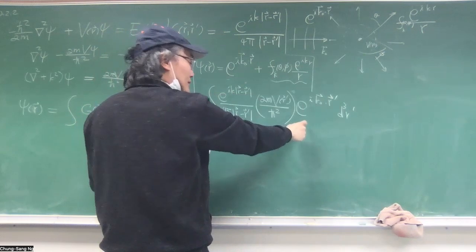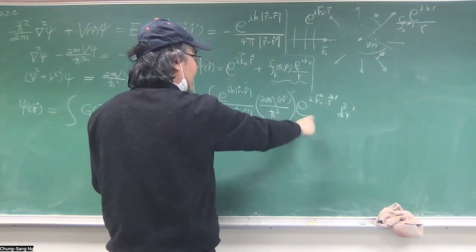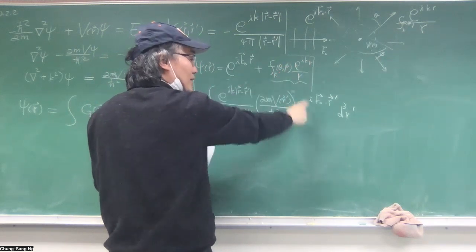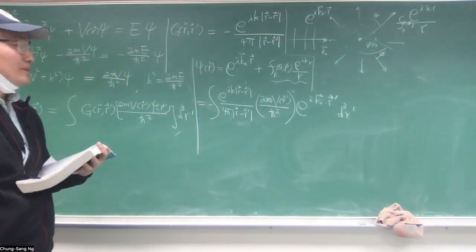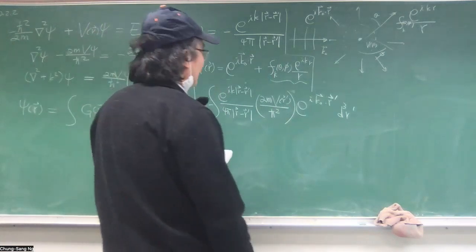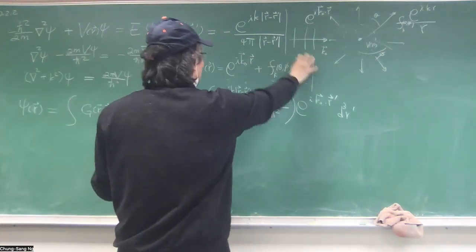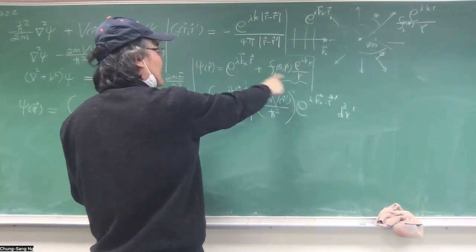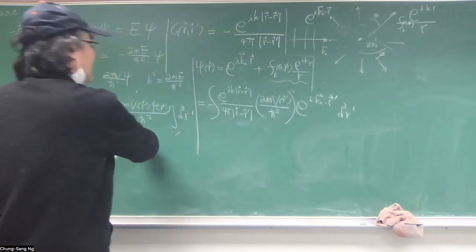And usually you repeat this experiment for many times, and then you measure the number of particles at different angles, right? And that becomes a probability. So that is what you want to compare with your experiment. So you want to calculate this. This is what you want to try to calculate. And so you don't want it to get into here. When you get into here, it becomes unknown.